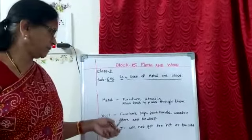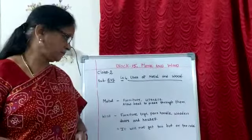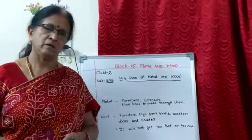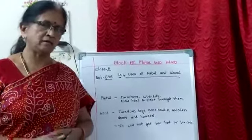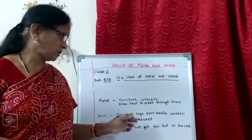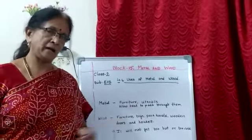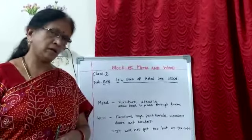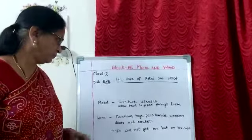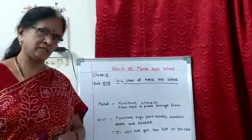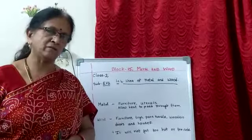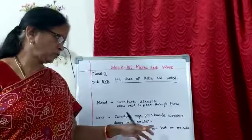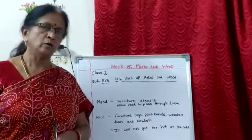Now, coming to wood. With wood, we can make furniture — for example, tables, chairs, benches, carts, and so many things. Also toys and pan handles. Why are pan handles made with wood? Because wood will not allow heat to pass through very fast. Wooden doors and houses are also made with wood. It will not get too hot or too cold.